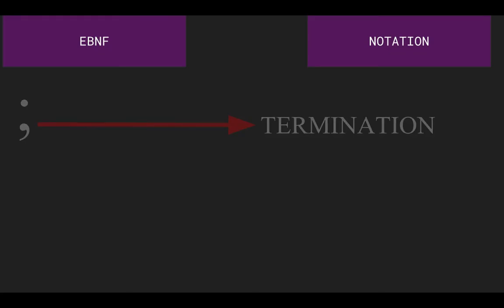Then, we have semicolons, which are named terminations. Similar to C-sharp coding, terminations are used to define the end of a definition or product. In this example, we can see that the integer definition ends after the natural number non-terminal definition.